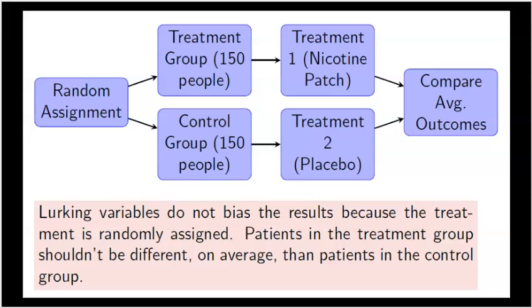Here is a diagram of this experiment. It starts with the random assignment of 300 people — 150 to the treatment group getting the actual patch, and 150 going to the control group getting the placebo. At the end, I compare the proportions and see who quit smoking.